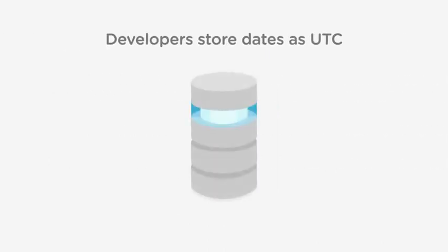Many developers approach this by always storing dates in their database as UTC. Any date going in is converted to UTC on input, and back from UTC on display. To calculate time zone offsets, many developers store plus one or minus four as an offset and put that in their database as an integer.